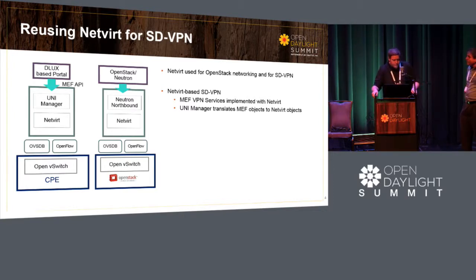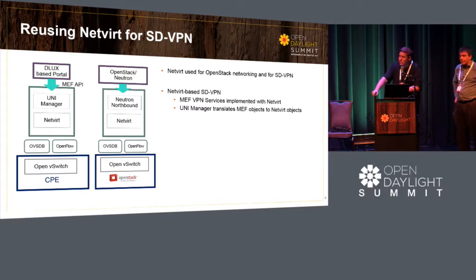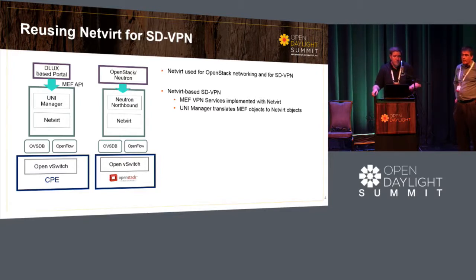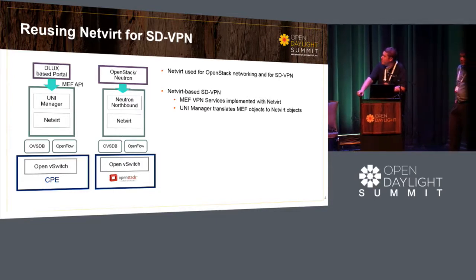We had to add additional capabilities — for example, E3, which is something OpenStack does not have. E3 is not a topology that OpenStack supports, so we had to contribute that into NetVirt, and now NetVirt has E3 capability. ELAN, obviously, was already supported.